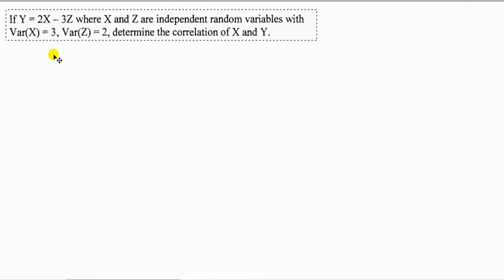We've got two random variables X and Z, and we combine them in a linear way to make another random variable Y. We've given some facts about the variance of X and the variance of Z, components of Y, and we're asked to determine the correlation between X and the new random variable Y.